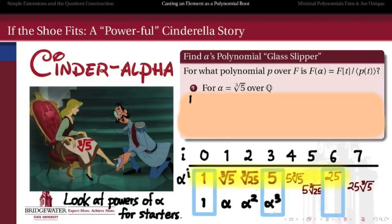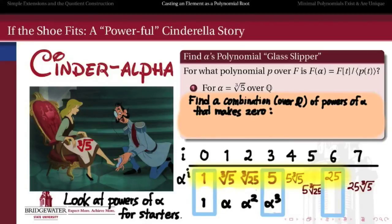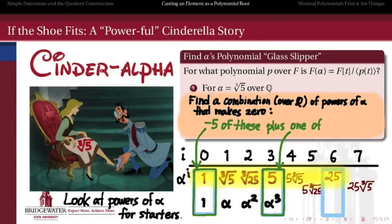So what we'd like to do is to take these powers of alpha and see if we can find some combination over q, in other words some rational linear combination of these powers, that comes out to 0. Because what is a rational combination of the powers of alpha but a polynomial that alpha will satisfy? So all we have to do is combine these highlighted numbers together in a way that gives us 0. So let's start by taking negative 5 of the 0th power of alpha, in other words negative 5 times 1, and 1 of the third power of alpha. That's going to give us 0 because it's negative 5 plus 5.